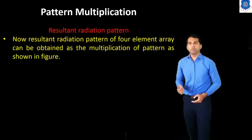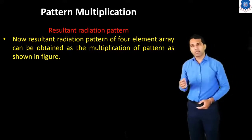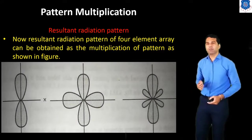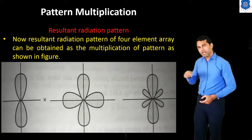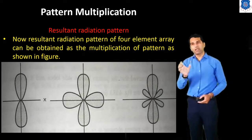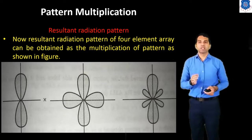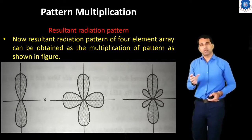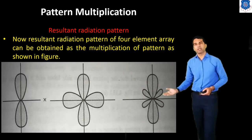Now we understand pattern multiplication. The resultant radiation pattern of the four-element array can be obtained as the multiplication of the patterns. The first figure-8 pattern indicates the pattern for two elements with distance lambda over 2 between them, and the second pattern is for the two elements separated by distance lambda. Multiplying these together gives the final resultant pattern.